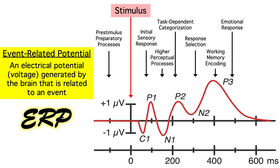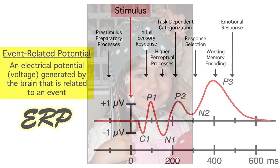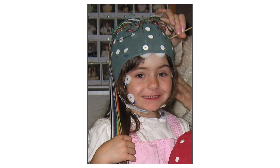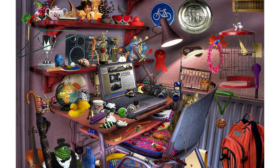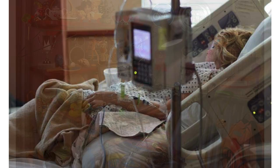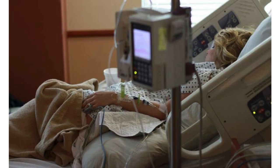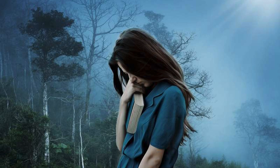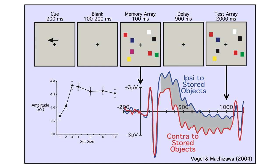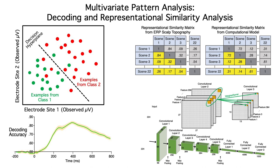So what can you do with ERPs? You can use them to study the development of face processing in infants and young children. You can use them to track the allocation of attention in complex scenes. You can predict which patients will wake from a coma. You can see how anxiety and depression change perception, attention, and decision-making. You can use ERPs to understand the origins of individual differences in working memory capacity, and you can even use ERPs to decode the contents of working memory and link brain activity to computational models.